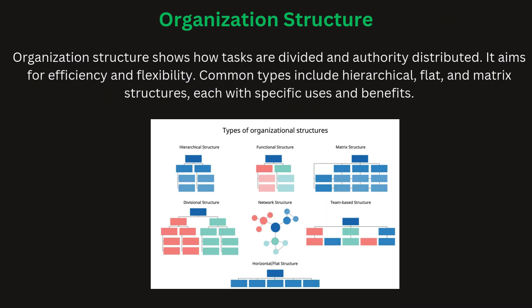An organization structure defines how tasks are divided, resources are allocated, and authority is distributed. It helps in achieving organizational goals such as efficiency, flexibility, and scalability. Factors like the size of the company, the nature of work, and the business environment influence structure formulation. Common types include hierarchical, flat, and matrix structures. Each type has its advantages, like better decision-making or improved communication, but also drawbacks like slower response time in hierarchical structures.